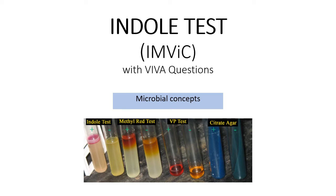Hello students and welcome back to Microbial Concepts. Today's video is on the indole test from IMVIC. This is a group of tests that we perform while identifying some coliforms. The four tests are: first, indole test; second, methyl red; third, Voges-Proskauer; and fourth, citrate. There will be four parts to this video, so do watch and check the playlist. Today we'll learn about the indole test.